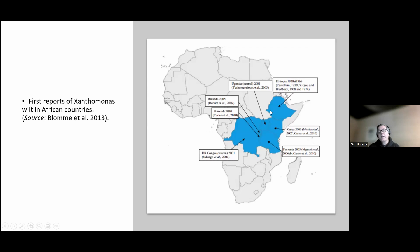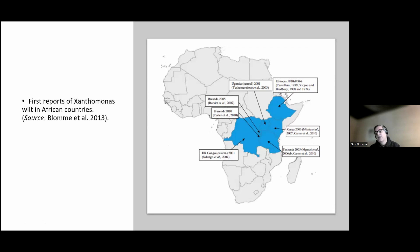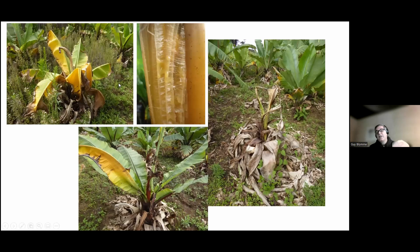It was only in 2001 that the disease spread to Uganda and Eastern Congo. Over the past two decades, the disease has gradually spread through all the banana production systems in Eastern Congo, Uganda, Western Kenya, Northwestern Tanzania, Rwanda and Burundi. The disease started on NSAID in Ethiopia, and here are some typical symptoms on NSAID.